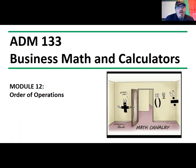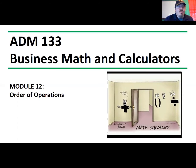After you take care of the grouping symbols and get those simplified, then you take care of powers and roots. If there are any exponents or square roots in your problem, those are done next, always from left to right. After exponents comes multiplication and division, again from left to right. And finally, the only thing left is addition and subtraction, done last, from left to right.